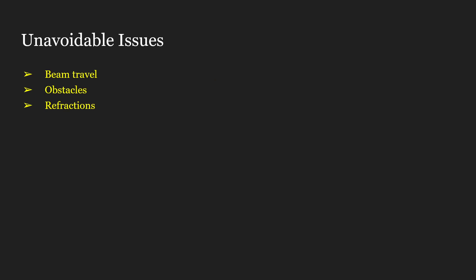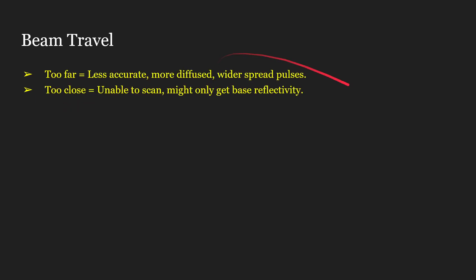Moving to the unavoidable issues of Doppler radar: beam travel, obstacles, and refractions. Beam travel we've already talked about. If the storm is too far out, that means the beam is going to be less accurate, more diffused, and the pulse is going to be wider spread out, which means it's less likely to interact with a solid object like rain or hail and send that information back. If it is too close, that means Doppler might not be able to scan the storm entirely, or it might only be able to get a base reflectivity.